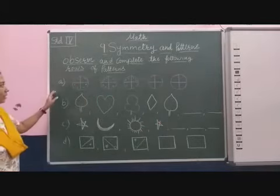Now see the next one: star is given, moon is given, sun — again star will appear. So what are the next two? Moon and sun. One more blank is given so we draw moon and sun. One more blank is given so we draw again star. So the pattern is: star, moon, sun — star, moon, sun — then star.